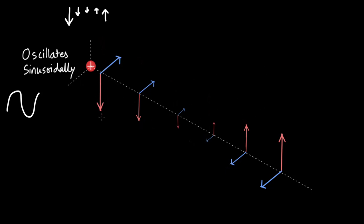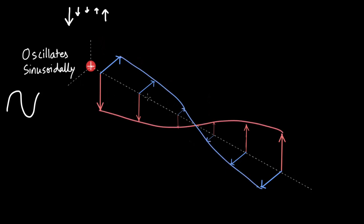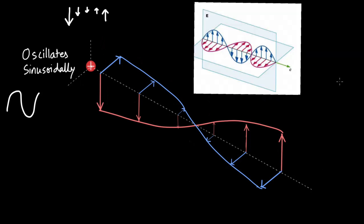Now let's join the tips of the electric field vectors and the magnetic field vectors. For the electric field this traces out a curve; for the magnetic field similarly — and they are perpendicular to each other. Even though this is not the full sine curve in the strict sense, if we continue it forms a sine curve, giving us the classic sinusoidal electromagnetic wave image.